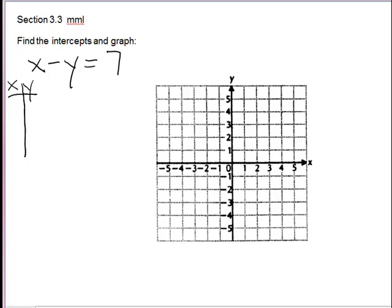For x-intercept, remember that's when we plug 0 into the y. So we have x minus 0 equals 7. The minus 0 is not going to matter, so we'll have x equals 7. That is the x-intercept.